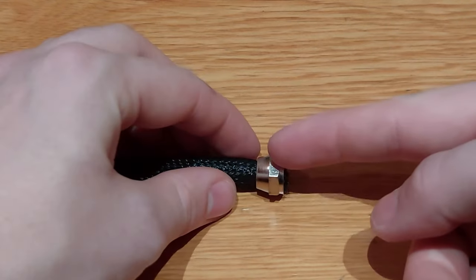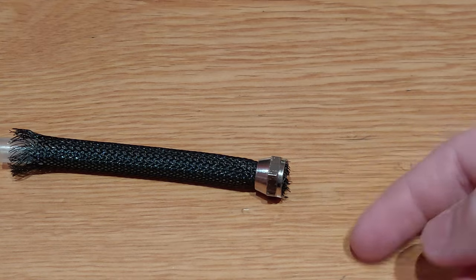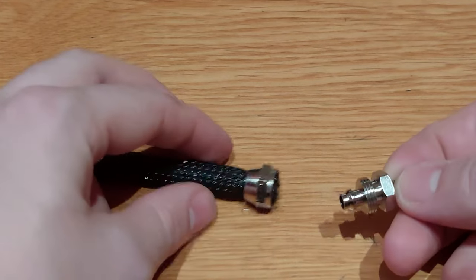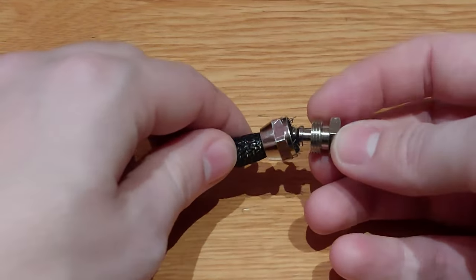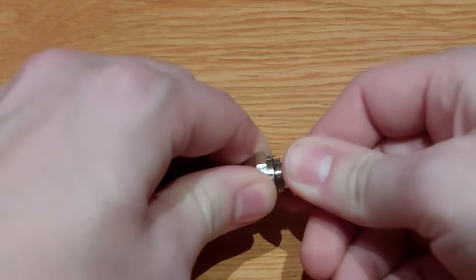Then you slide over the first part of the coupler. You cut the sleeving to size. Then you take the second part of the coupler, you push this inside, and you screw it together.